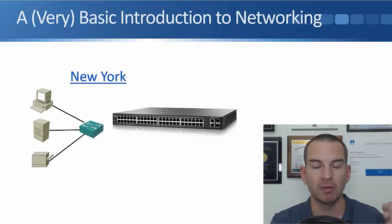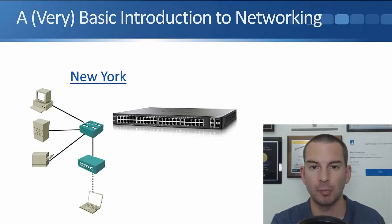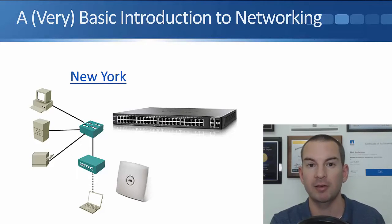The switch is what allows connectivity on my local area network in that office in New York. Maybe I've also got a laptop which is going to connect in over a wireless network, so for that I'm also going to have a wireless access point which is also going to connect into our switch. And that's what a wireless access point looks like. So I've got all my devices in New York, now they can all talk to each other.